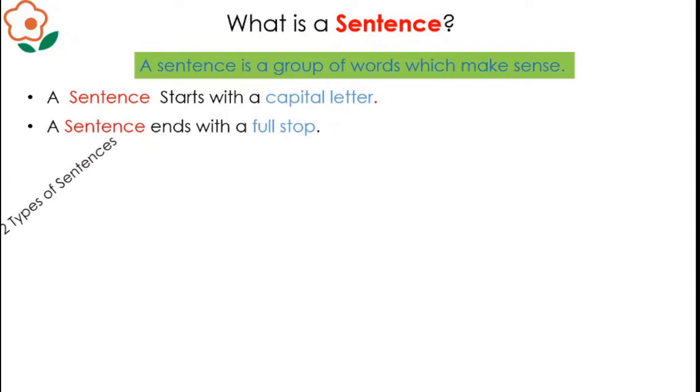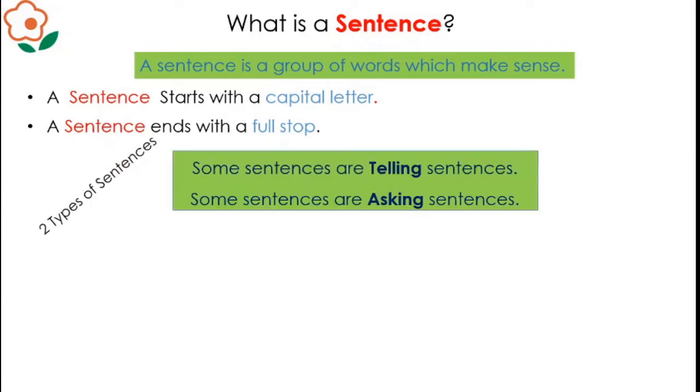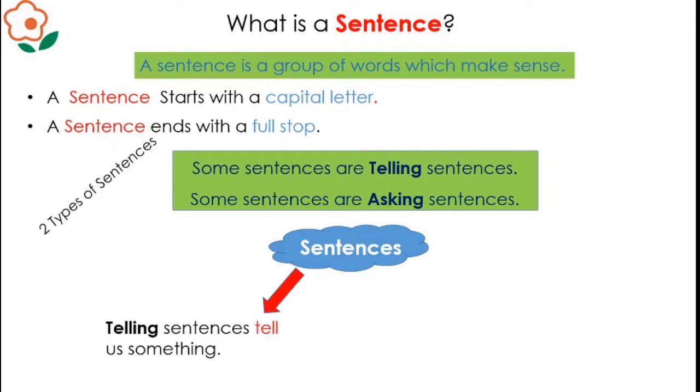There are four types of sentences, but we are going to describe only two types: telling sentences and asking sentences. Telling sentences are also known as statements. They tell us something and always end with a full stop, starting with a capital letter. Asking or interrogative sentences ask us something, always ending with a question mark and starting with a capital letter.